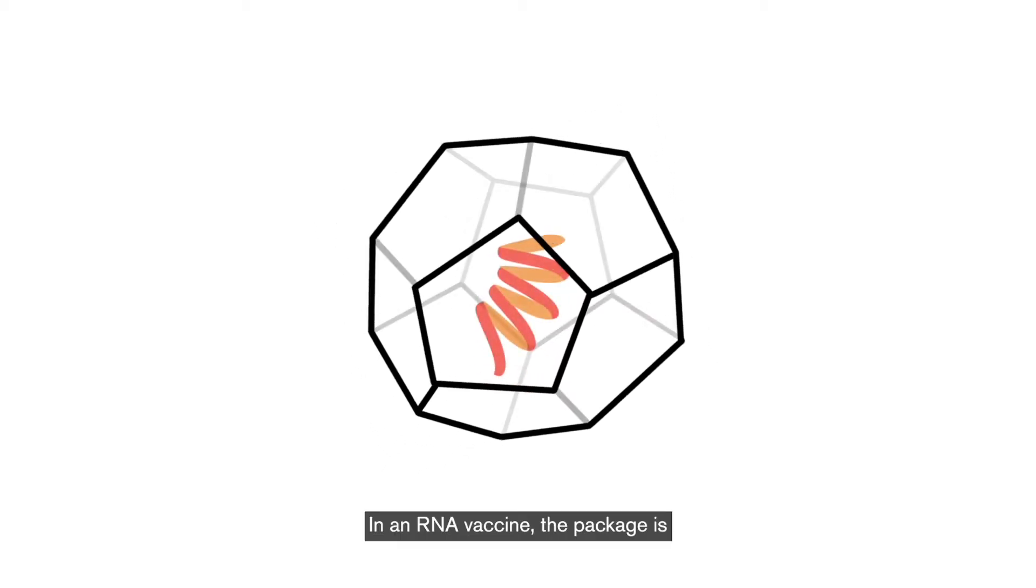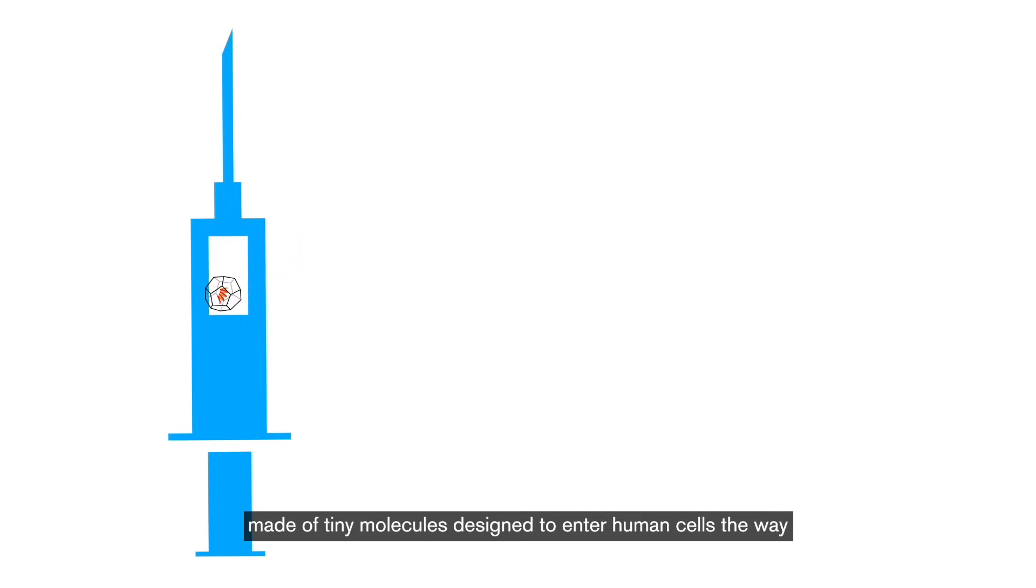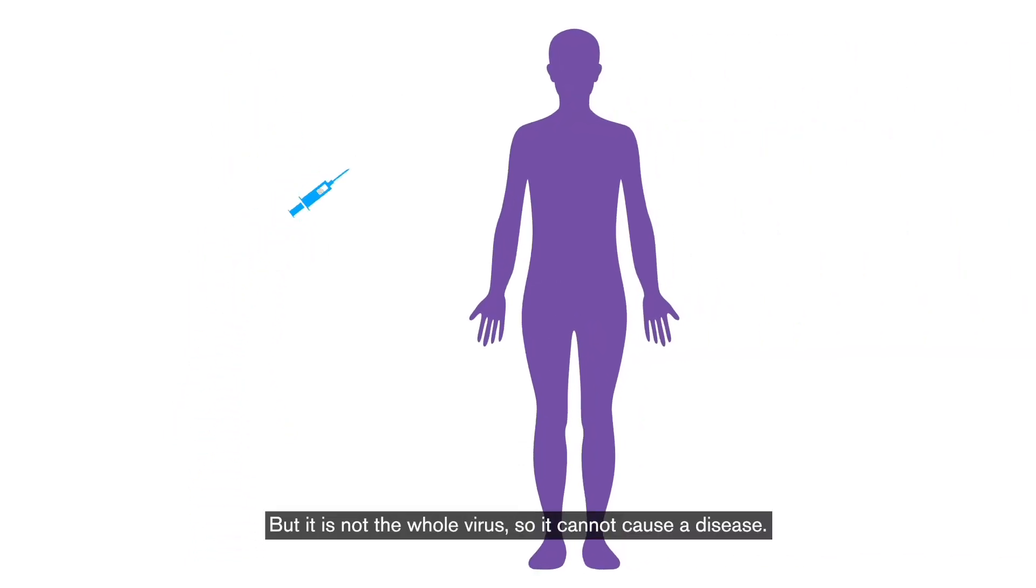In an RNA vaccine, the package is made of tiny molecules designed to enter human cells the way a virus would. But it is not the whole virus, so it cannot cause a disease.